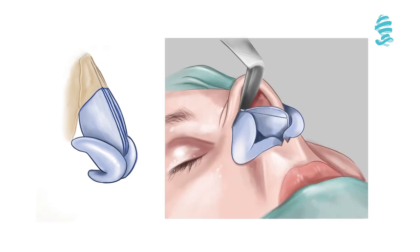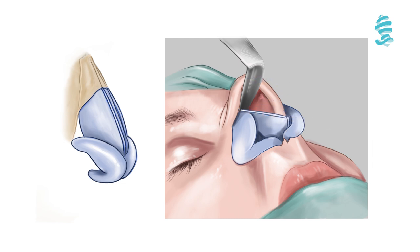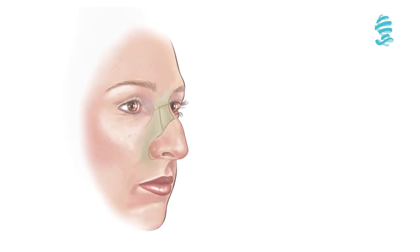Another method is to remove the septal hump after dissecting and preserving the upper lateral cartilages. A third way of getting rid of the bony-cartilage hump is the use of the dorsal preservation technique.